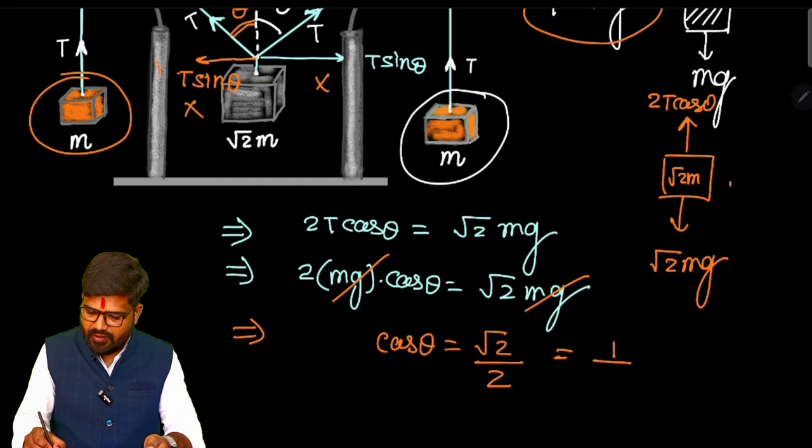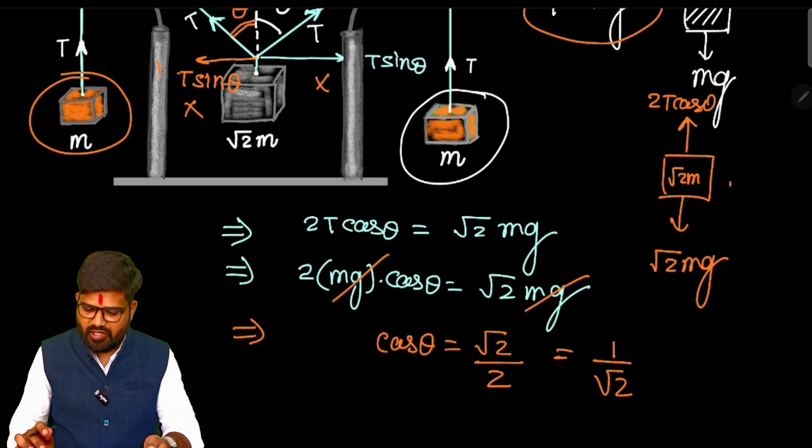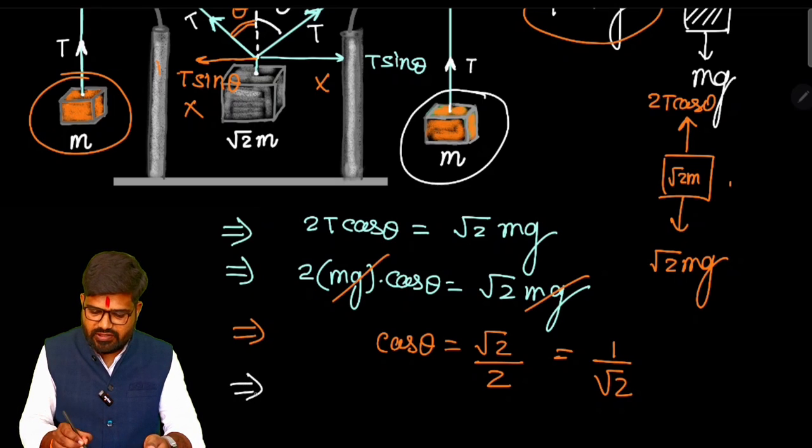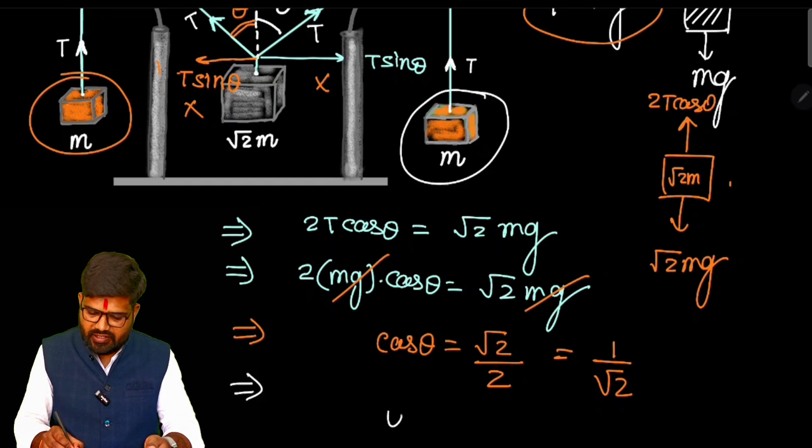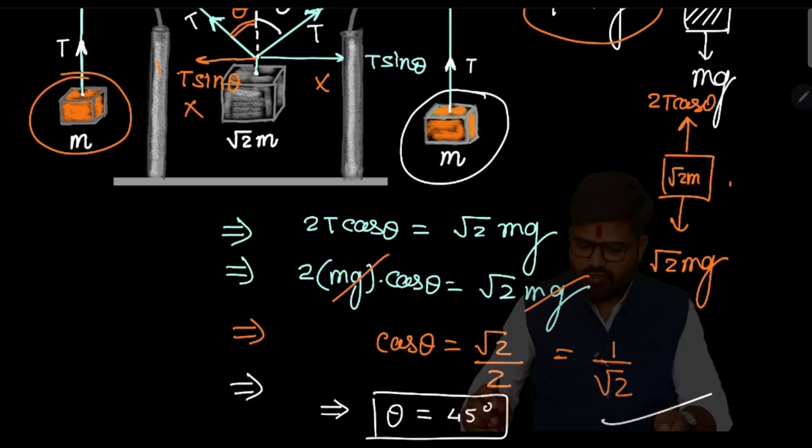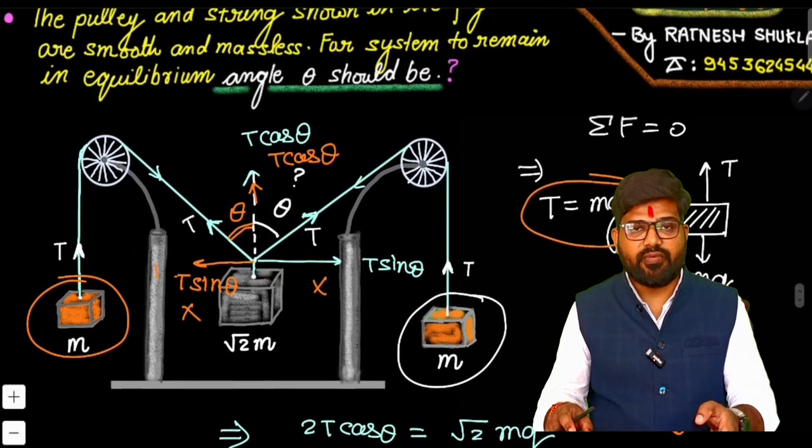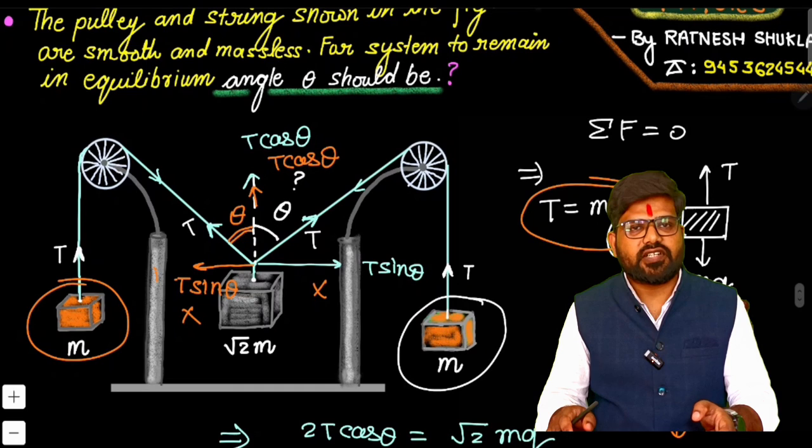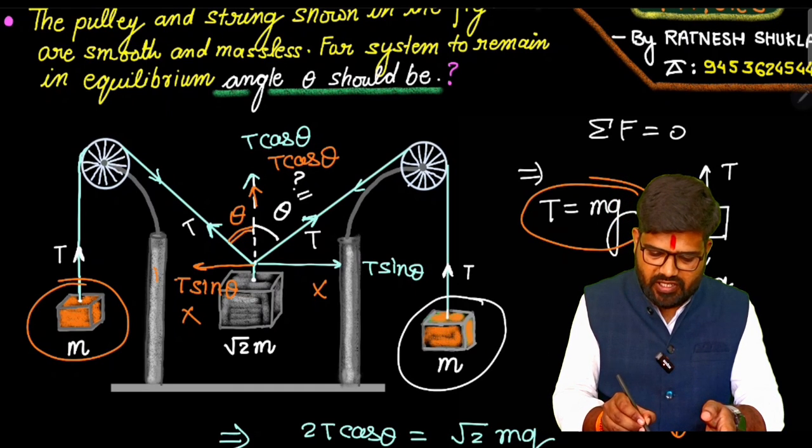Now think about the angle theta. What should be the value of theta for which cos theta is 1 by √2? You will say theta will be 45 degree. It is quite obvious that theta should be 45 degree. So for the system to remain in equilibrium the angle made by the strings with the vertical direction should be 45 degree.